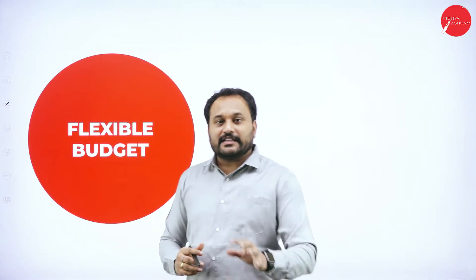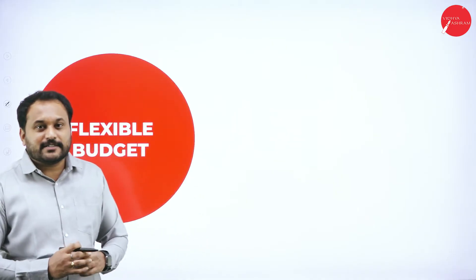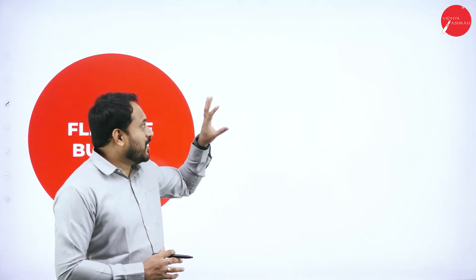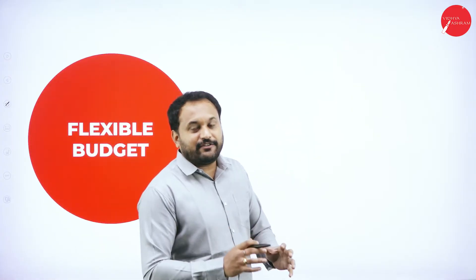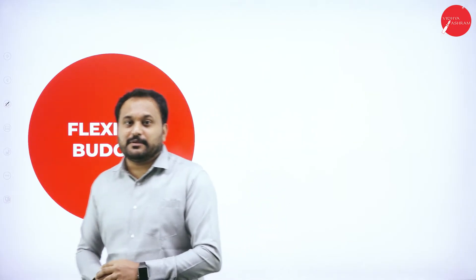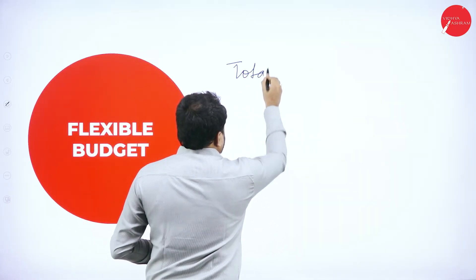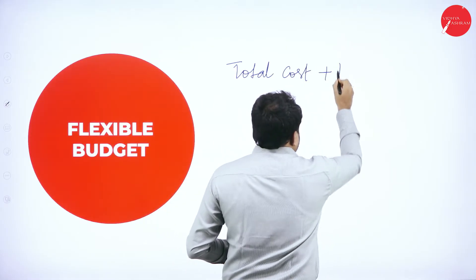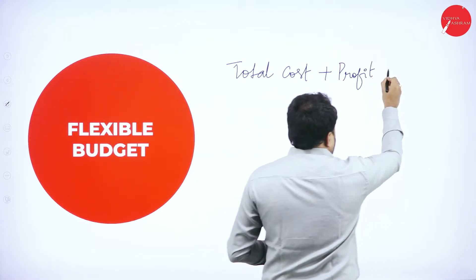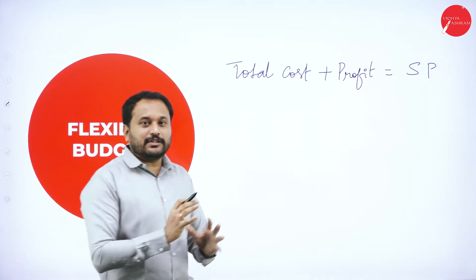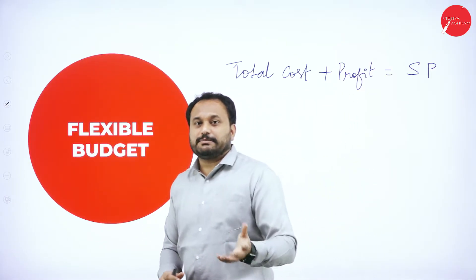Let's start with the first classification: flexible budget. There is a proforma, and I'll give you a way to remember it — these are the Abhilasha Chandra tricks. The formula is: total cost plus profit equals selling price. We know this formula from standard itself — cost plus profit equals selling price.